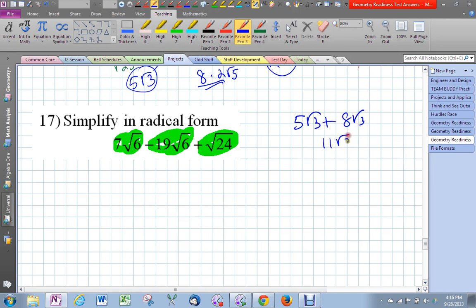Excuse me, I just added. So in this case, I see some of the radicals are exactly the same: 7 radical 6 and negative 19 radical 6. So altogether when I combine those two, that's going to be negative 12 radical 6.